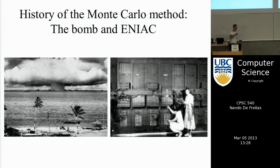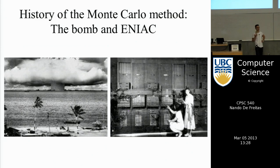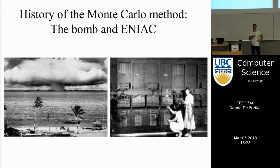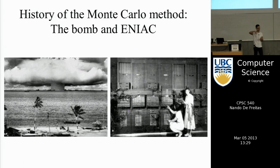Monte Carlo goes back to ancient Greece where it was used to compute pi. In terms of publications, one of the first mentions is in a paper by a Guinness employee who, since Guinness didn't allow publishing, called himself Student — and that paper introduced the Student t-distribution, which we use for robust analysis. He used Monte Carlo to study that distribution.